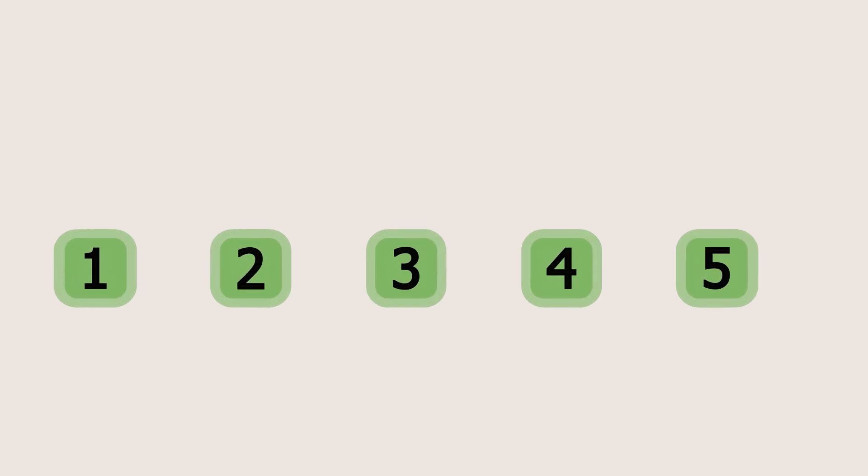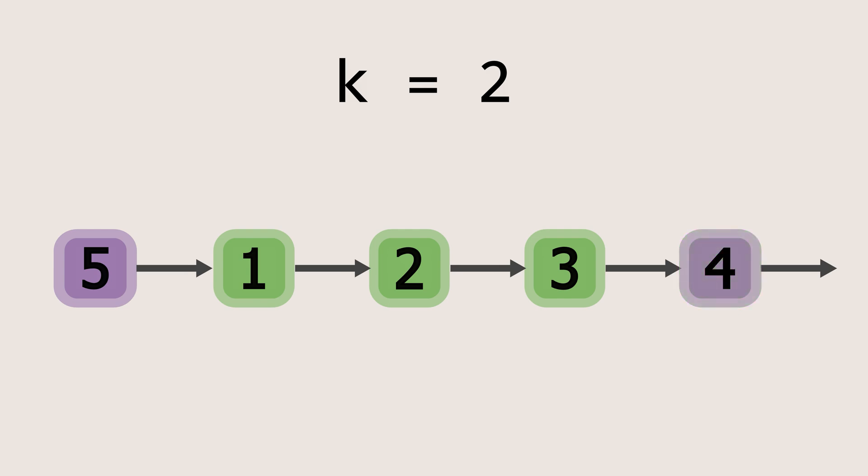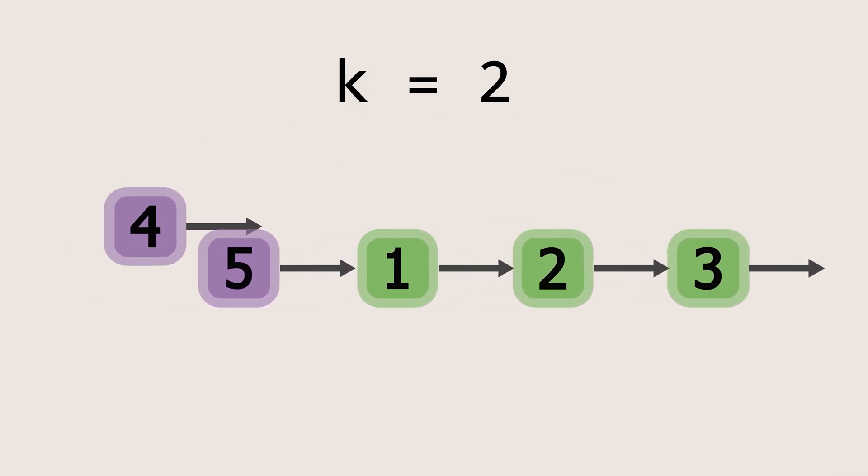Let's see the LeetCode problem of rotating the list. We are given an example linked list here and we have to rotate it k times. So let's take k equals 2 for our example. This means we have to take the last element of the list and move it to the front, and we have to do this 2 times.